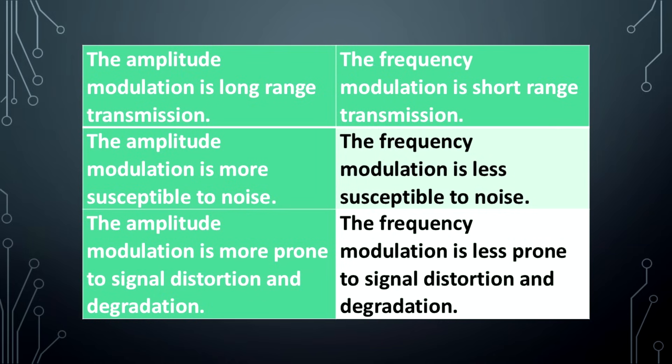Amplitude modulation is long-range transmission; frequency modulation is short-range transmission. Amplitude modulation is more susceptible to noise; frequency modulation is less susceptible to noise. Amplitude modulation is more prone to signal distortion and degradation; frequency modulation is less prone to signal distortion and degradation.